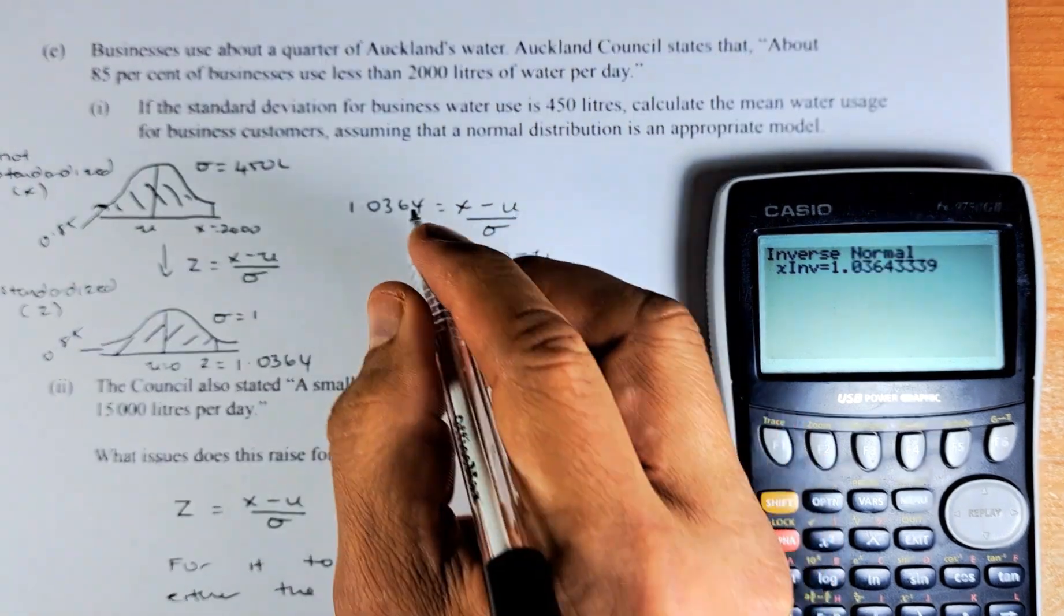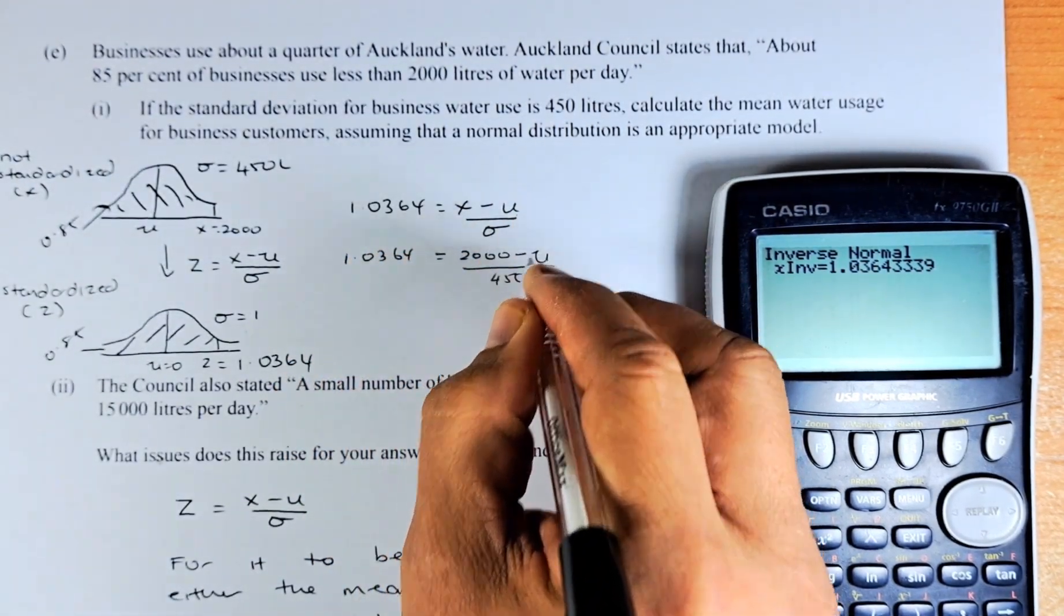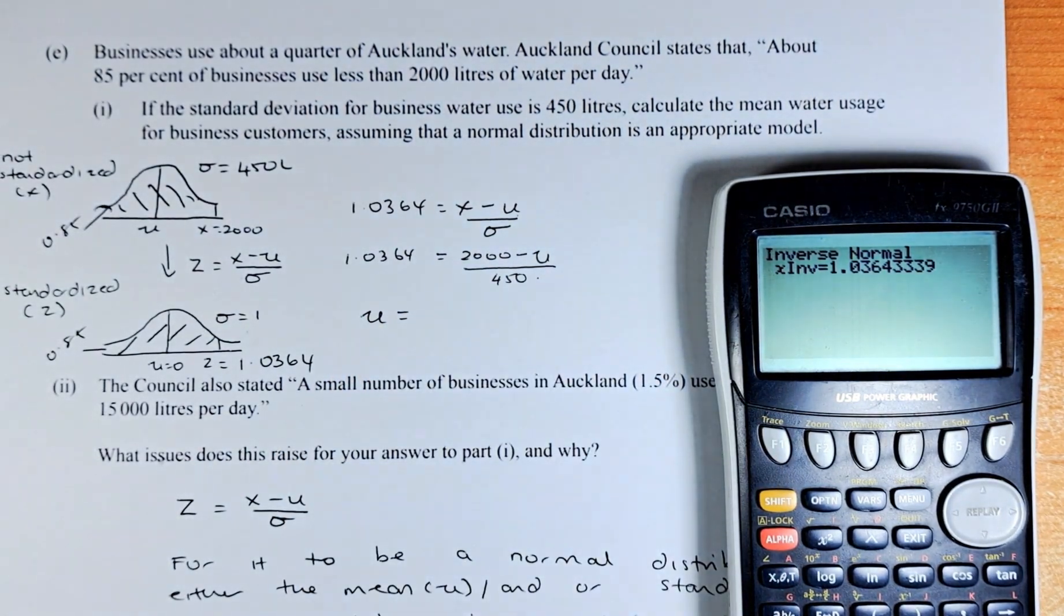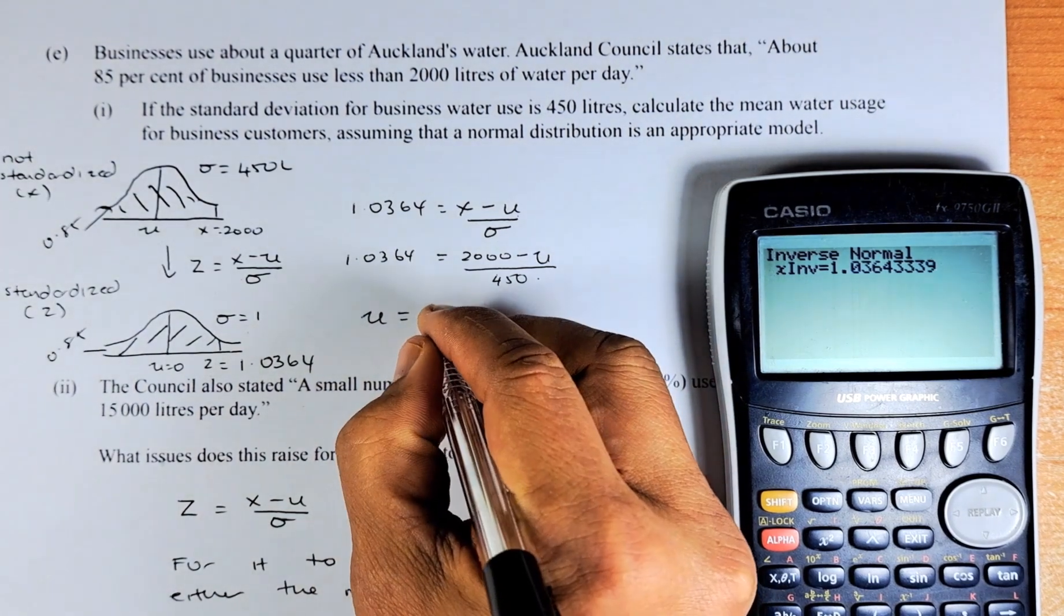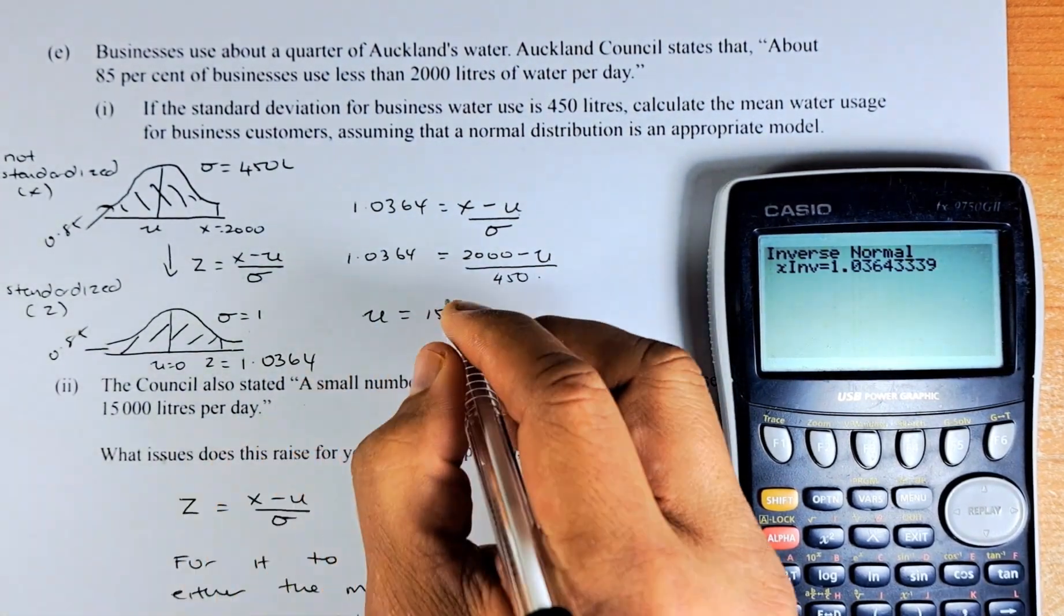Now from here, it's equal to 1.0364. From here, use your calculation. So nu, if you calculate correctly, it's going to be 1,533.62 litres.